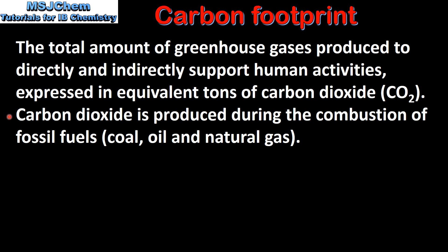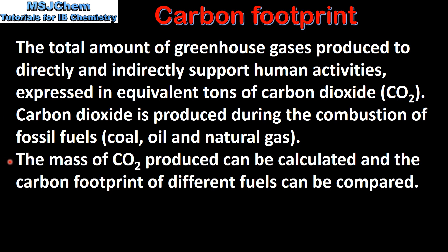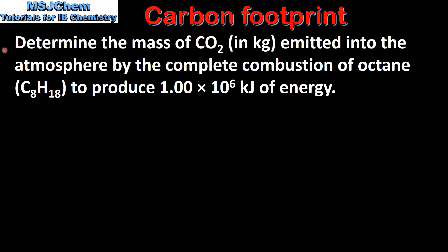Carbon dioxide is produced during the combustion of fossil fuels. The mass of carbon dioxide produced can be calculated and the carbon footprint of different fuels can be compared. In our first example we'll determine the mass of carbon dioxide in kilograms emitted into the atmosphere by the complete combustion of octane, which is C8H18, to produce 1 times 10 to the 6 kilojoules of energy.